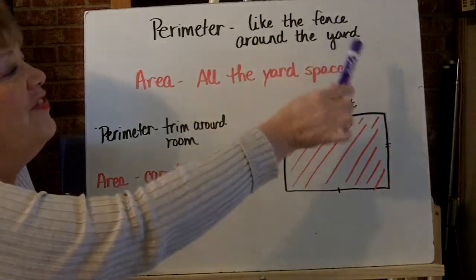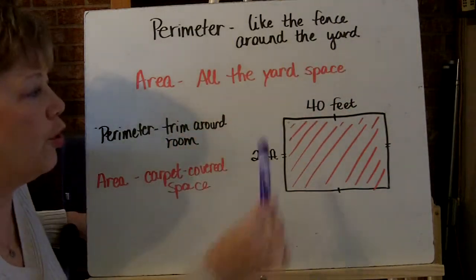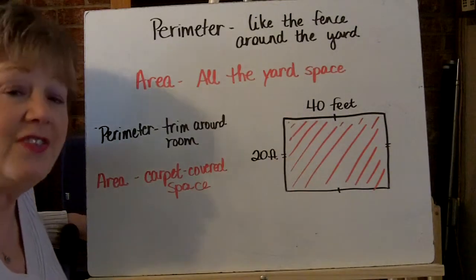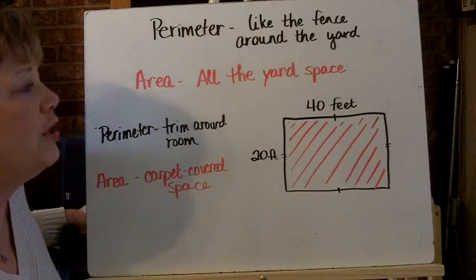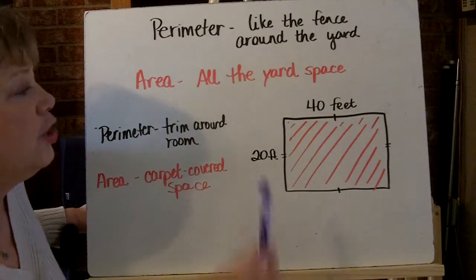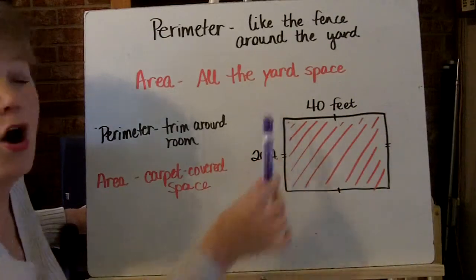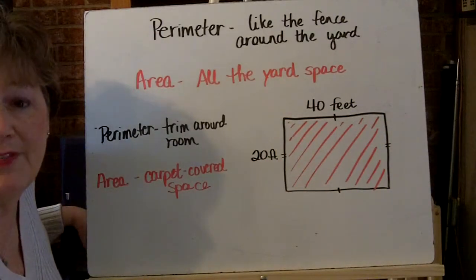The perimeter is like the fence around your yard. So if this was the yard, the black would be the fenced area. And if you want to know the perimeter, then you simply add up how long or how big the fence is.